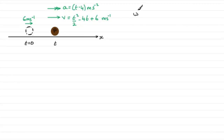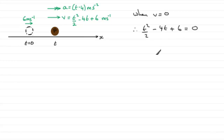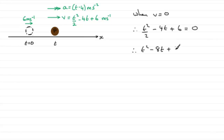So we're going to set V equals 0 and substitute it into this equation. We therefore have T squared over 2 minus 4T plus 6 equals 0. Now I'm going to solve this equation for T. What I want to do is multiply by 2 throughout, so we get T squared minus 8T plus 12 equals 0.